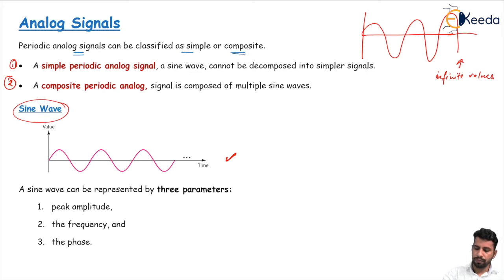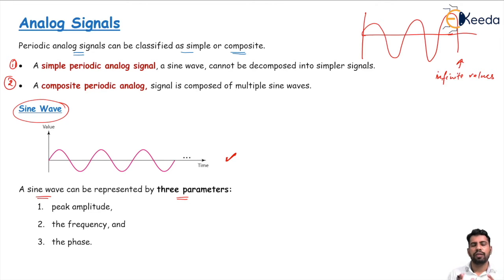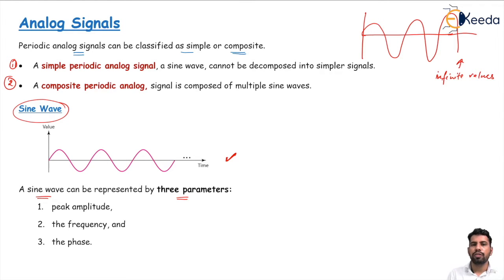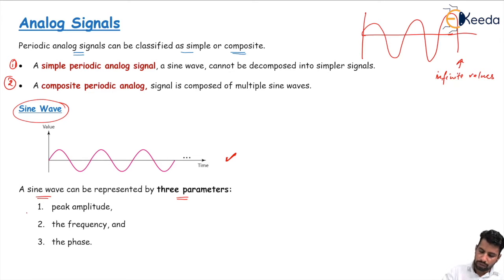A sine wave can be represented with three parameters. When we want to study something, we need characteristics or components of that thing. In the same way, the sine wave has three parameters, which are the characteristics of analog periodic signals. The first one is peak amplitude, the second is frequency, and the third one is phase.